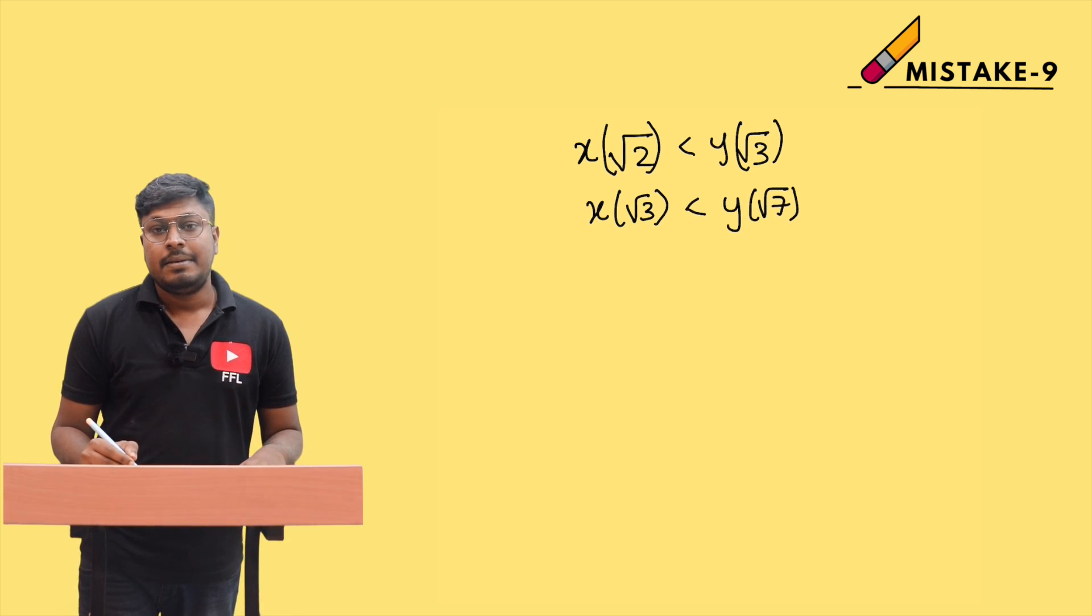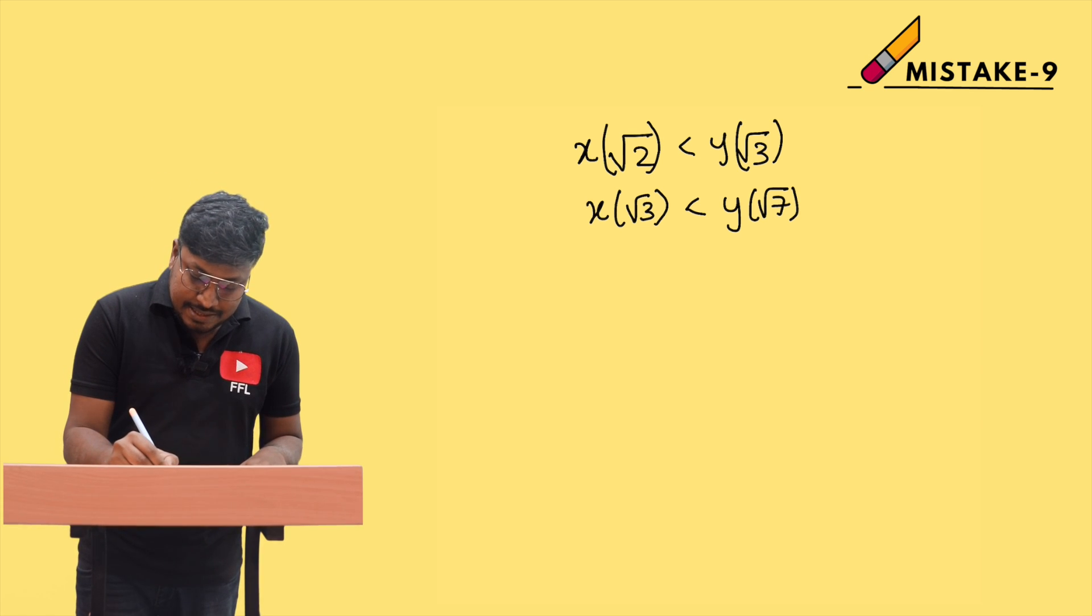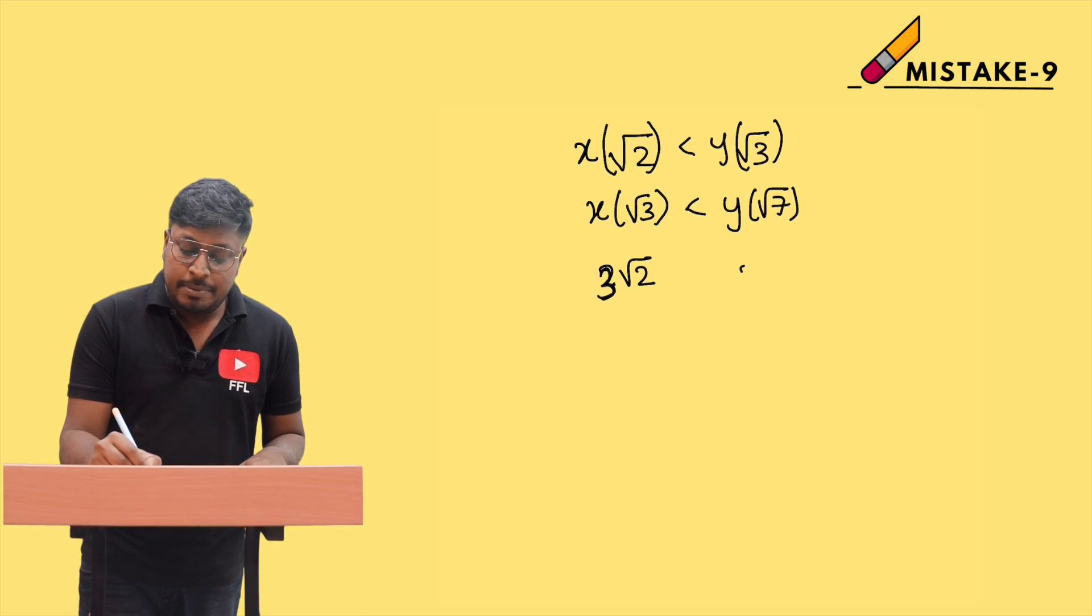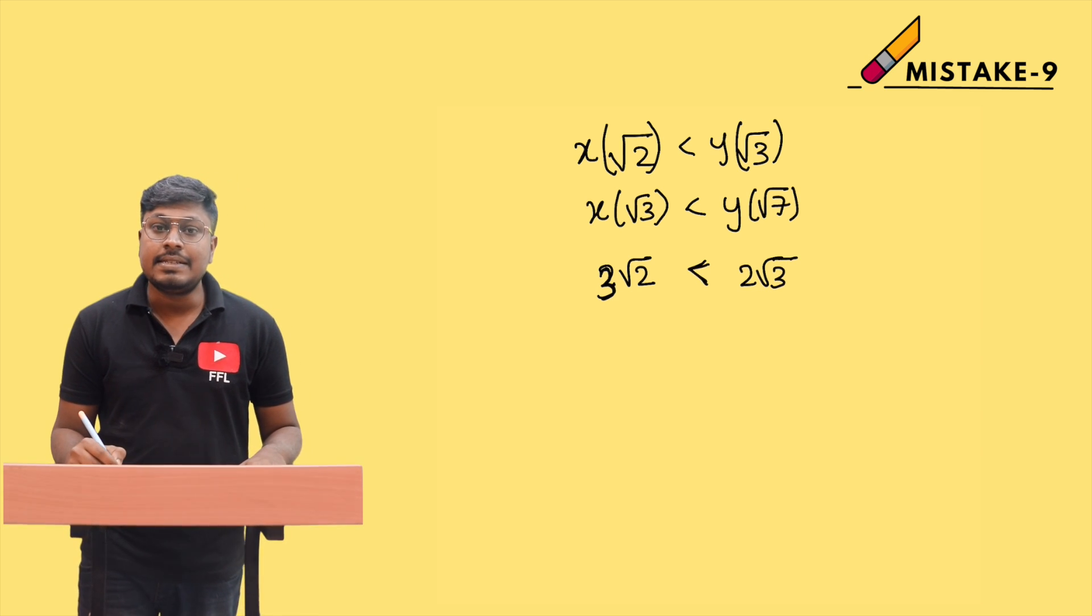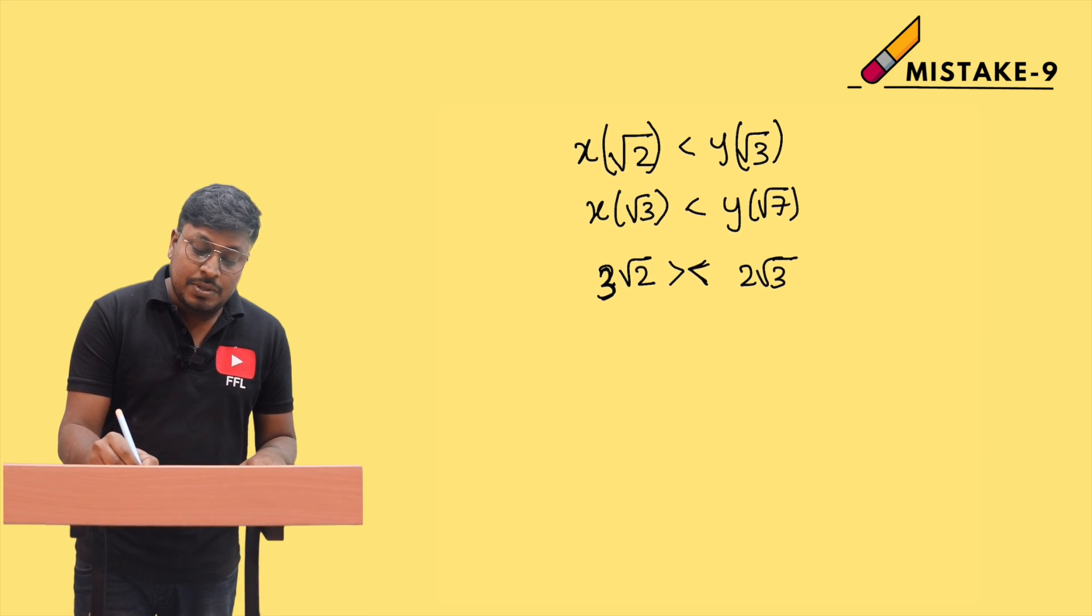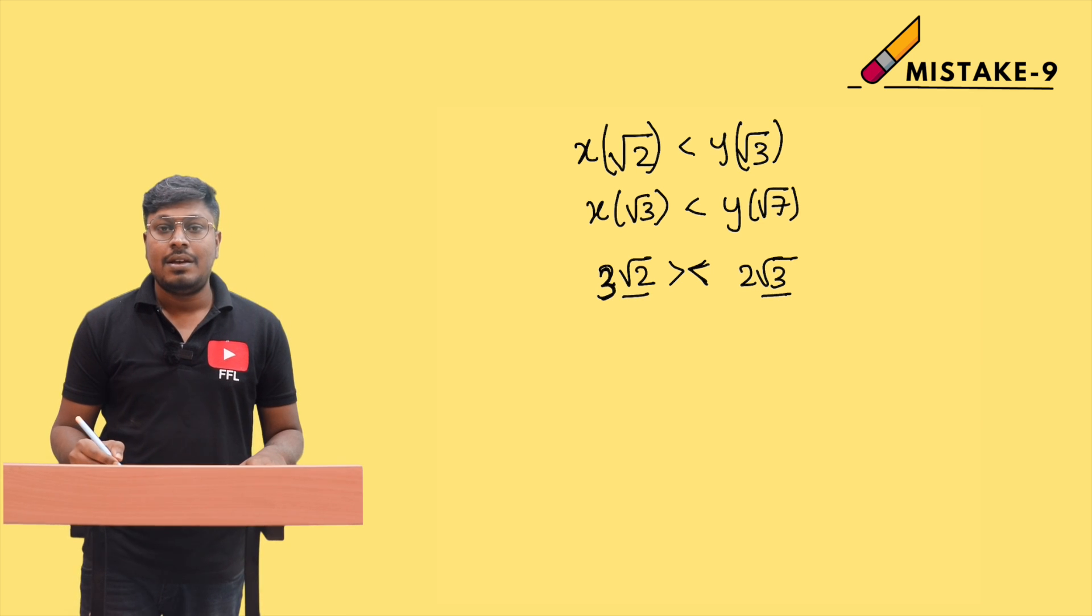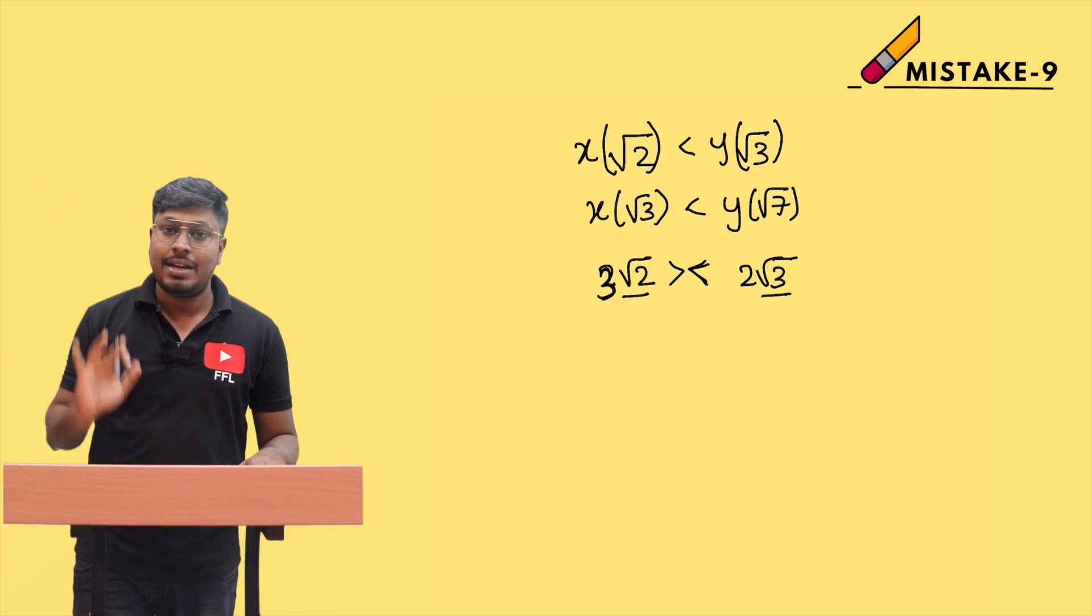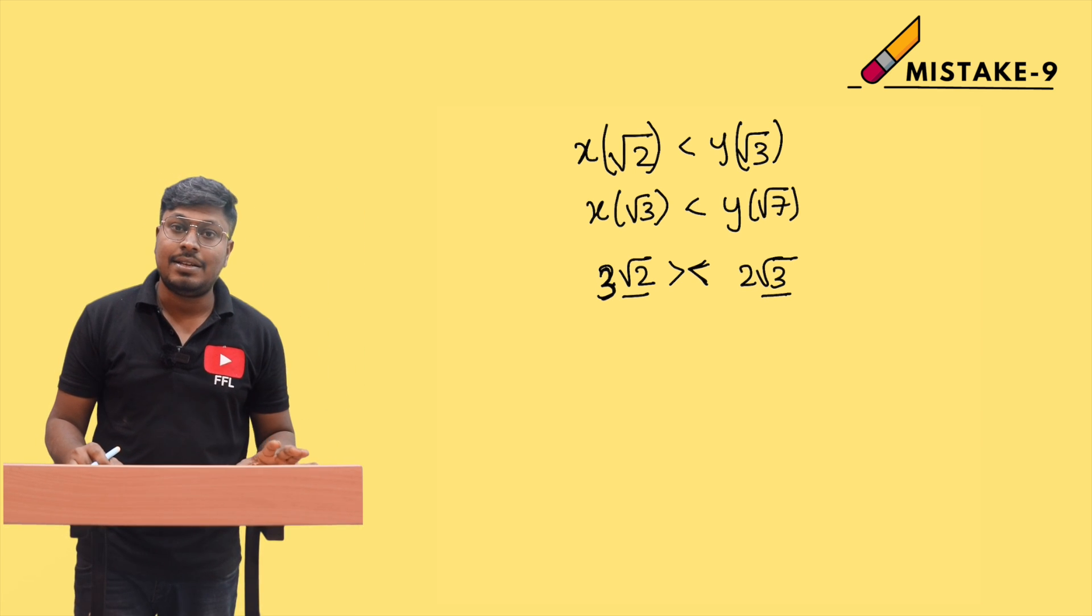But if the question is like 3√2 and 2√3, where x value is 3√2 and y value is 2√3, students will say y is greater. Is this correct? No, it's wrong! The answer is x is greater, because without knowing the √3 and √2 values, students think √3 is always greater than √2.